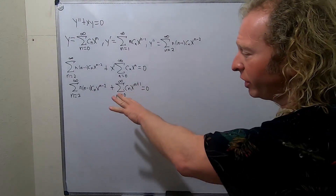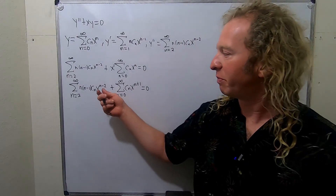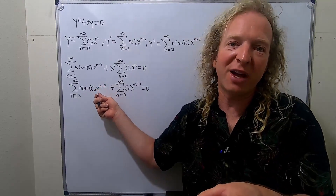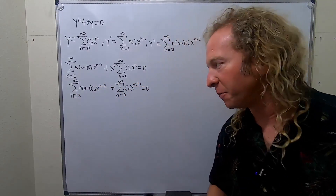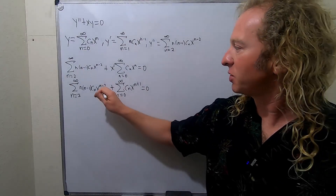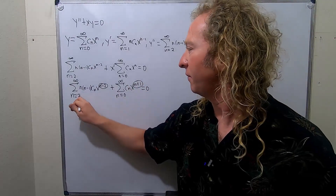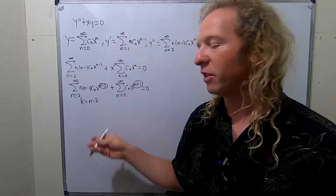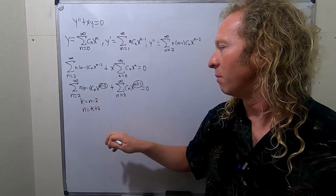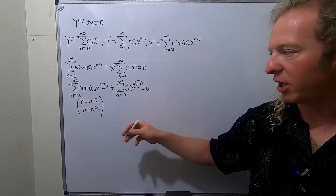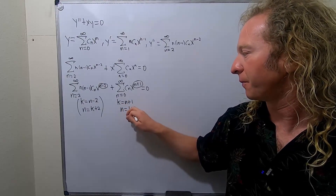Now the next step is to combine the sums, but you can't do that unless they both have the same exponent — you want both to be x^k — and you want them both to start at the same number. The way I do it: I always call the exponent k and solve for n. So for the first sum, set k = n−2, which gives n = k+2. For the second sum, set k = n+1, which gives n = k−1.